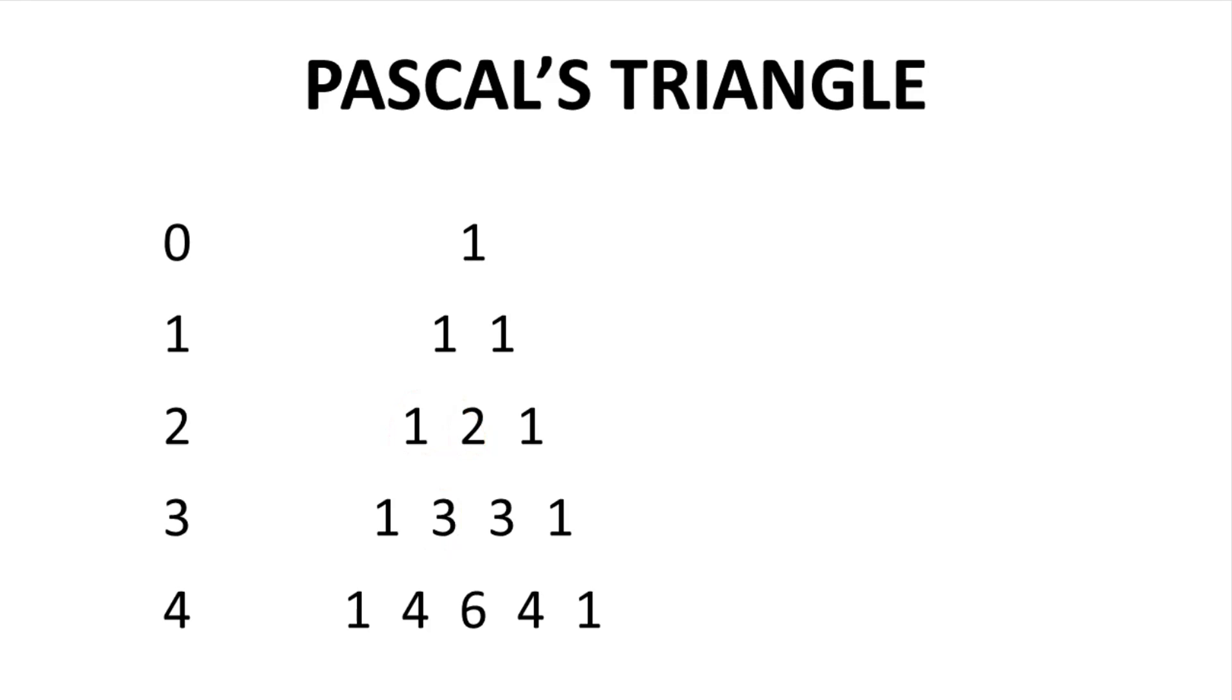This pattern of numbers allows quick prediction of coupling patterns in proton spectra. To the left is a set of numbers, zero through four. These numbers represent the number of neighboring hydrogens, vicinal neighbors that a hydrogen has. We'll call this column N, number of neighbors. So if a hydrogen has zero neighbors, the signal for that hydrogen will have a single peak, a singlet.